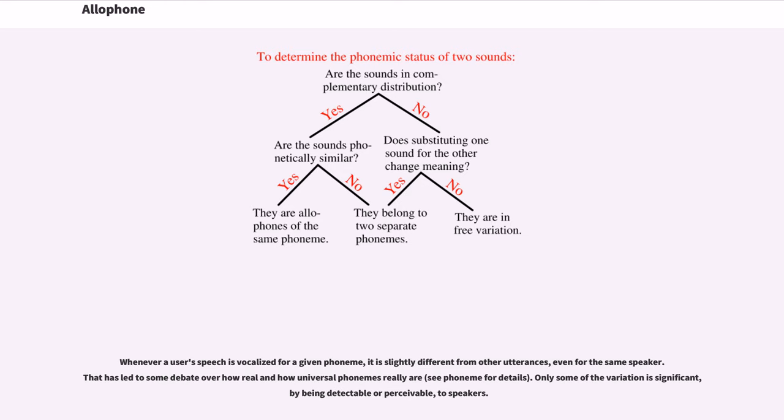Whenever a user's speech is vocalized for a given phoneme, it is slightly different from other utterances, even for the same speaker. That has led to some debate over how real and how universal phonemes really are. Only some of the variation is significant, by being detectable or perceivable to speakers.